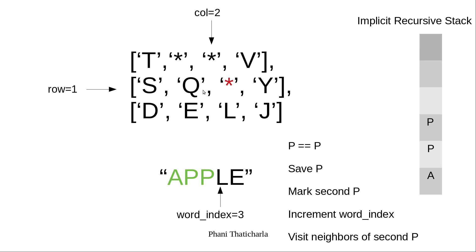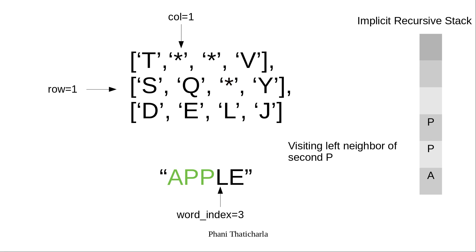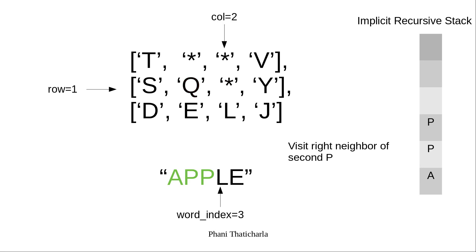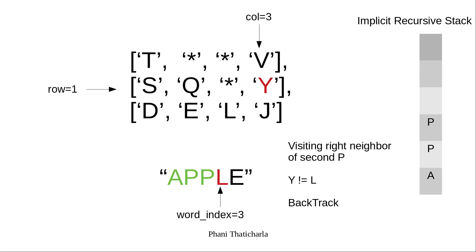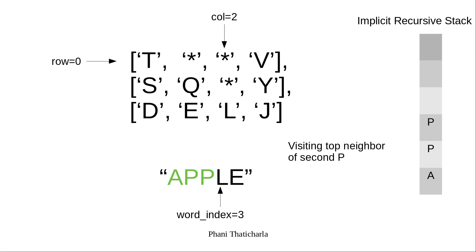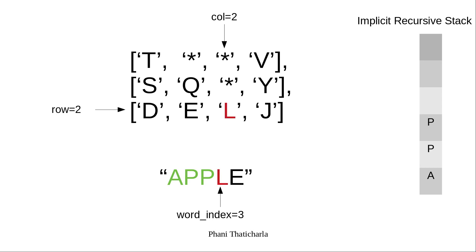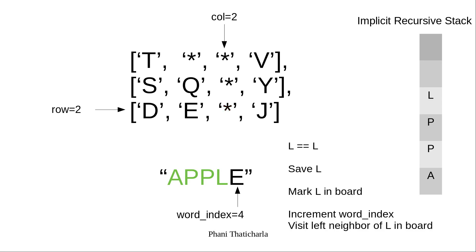After this we'll visit the neighbors of this second P. We visit the left neighbor — Q is not equal to L, so we backtrack. We visit the right neighbor — Y is not equal to L, so we backtrack again. We visit the top neighbor — star is not equal to L, so we backtrack. Now let's visit the bottom neighbor of P. Here L is equal to L. So we'll save this letter, mark it with a star, and increment the word index by 1.